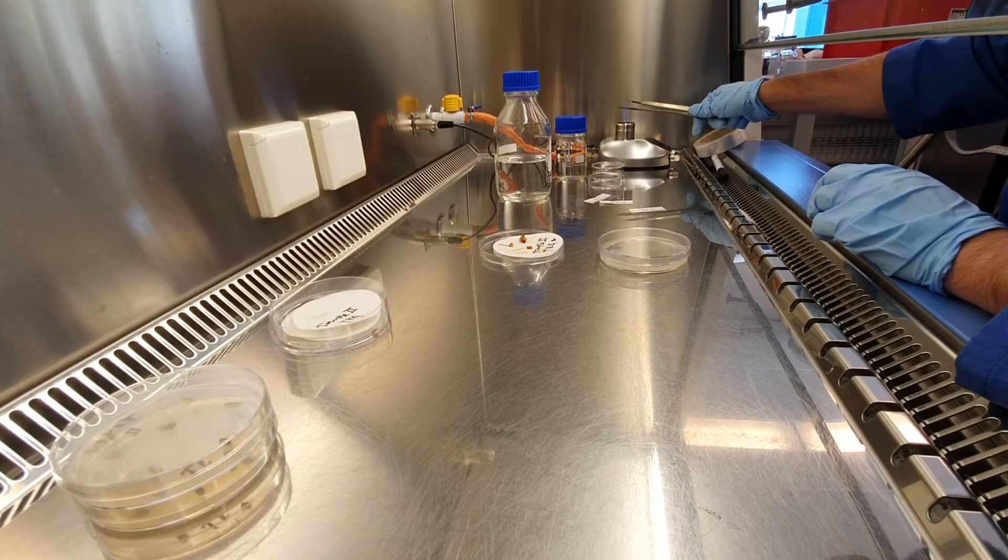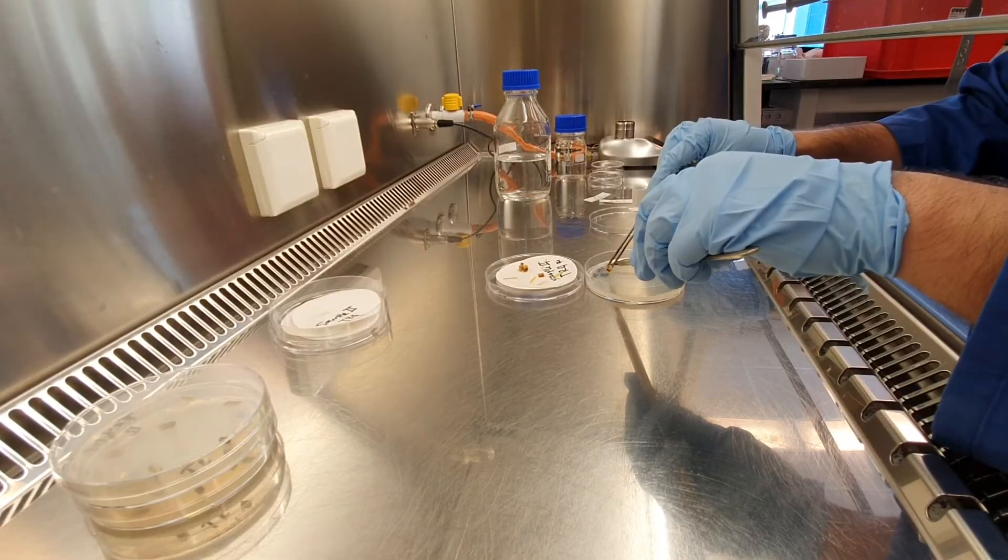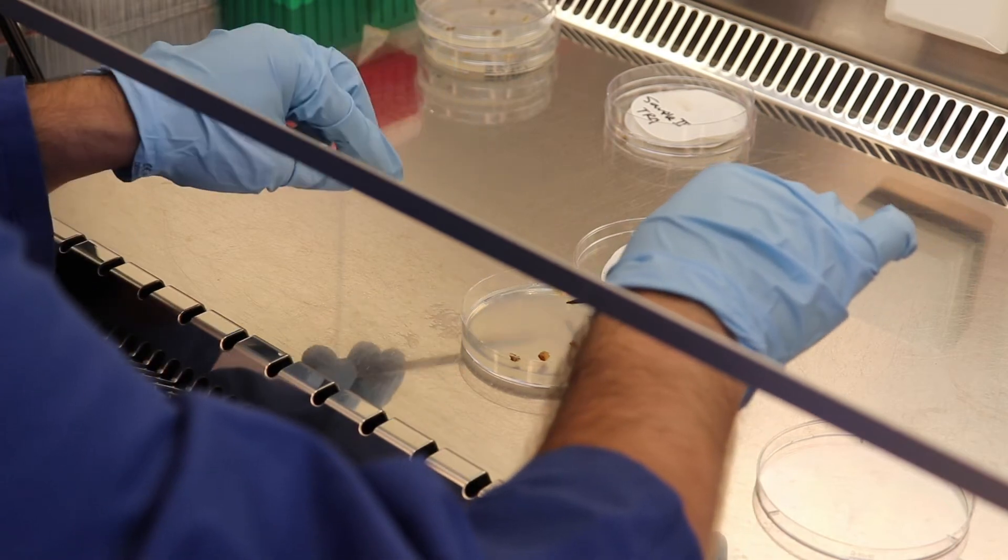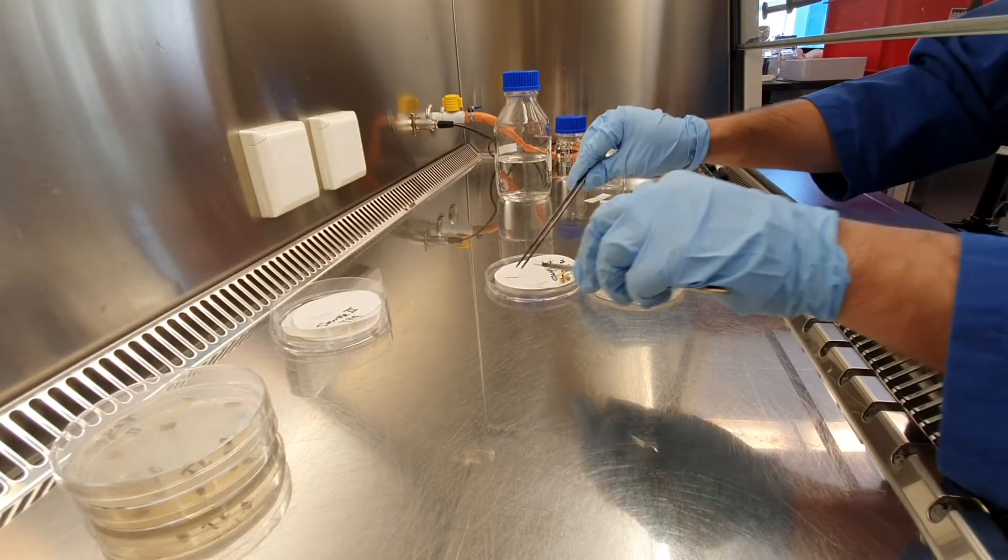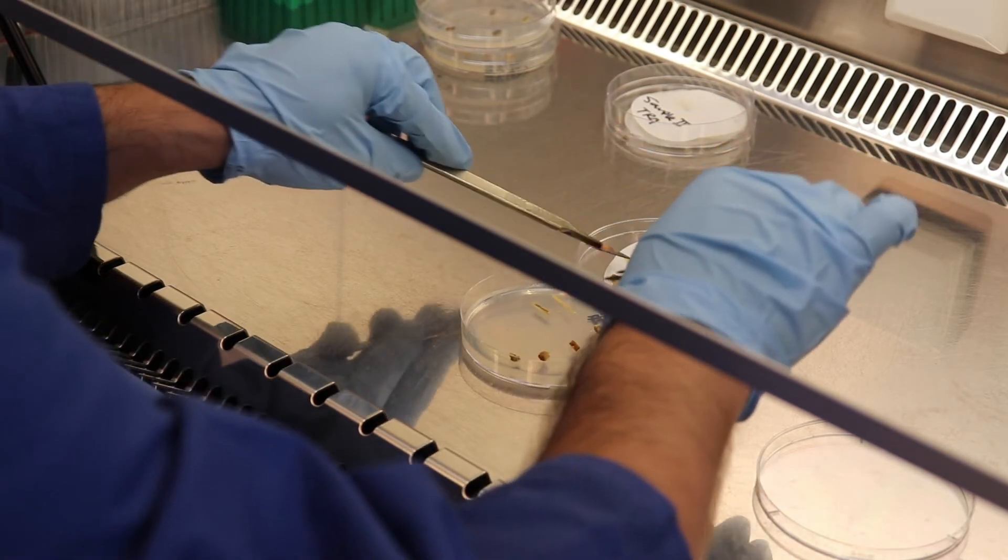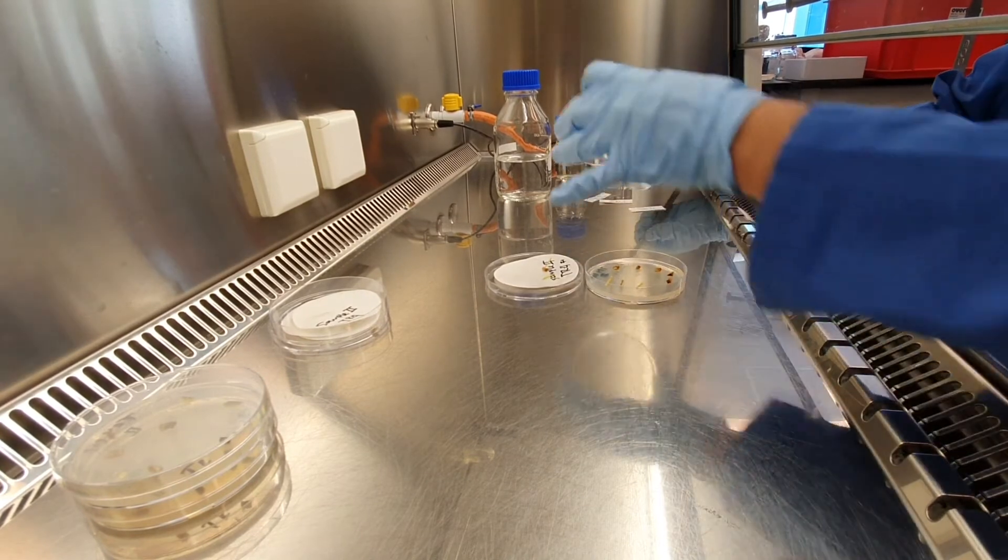And finally, sample three, the ugly one. As you can see, looks the same as the previous samples. I'm just placing the seldo stem in one side and the pieces of corn in the other side. That's it. Sample three.